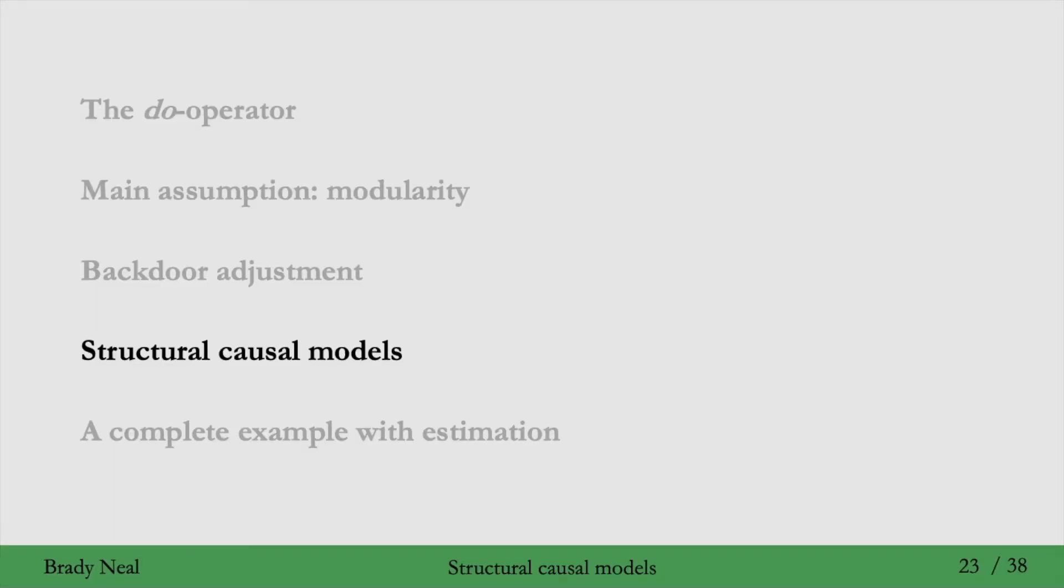That concludes the backdoor adjustment section. We now know how to adjust for confounding in causal graphs. We'll now introduce structural causal models, which will help make everything that we've seen in this lecture so far a bit more concrete.